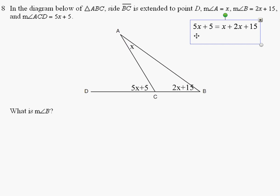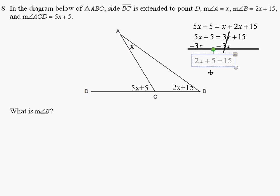Let's solve for x. Combine the like terms here. We get 5x plus 5 equals 3x plus 15. Minus 3x on both sides. Cancel out the 3x's. We get 2x plus 5 equals 15. And when you solve for x, you should get x equals 5.